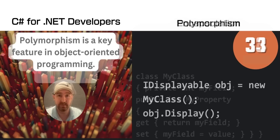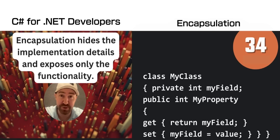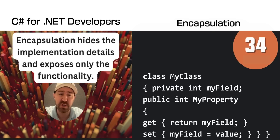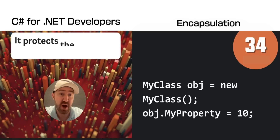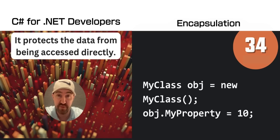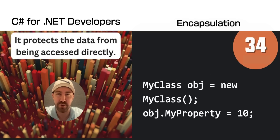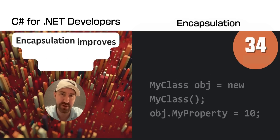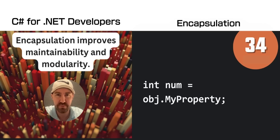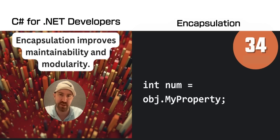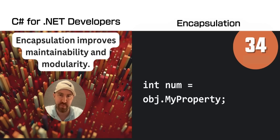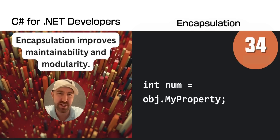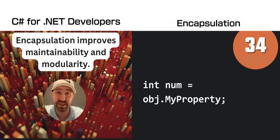Here you can see an example of encapsulation using the property pattern to prevent direct access to the MyField private field. A bit of a contrived example, but obviously you can only access it via the property. By only exposing members that callers need to access, this improves modularity and maintainability.